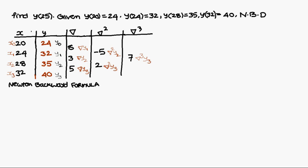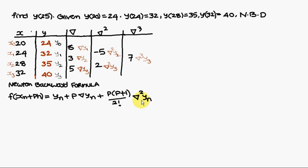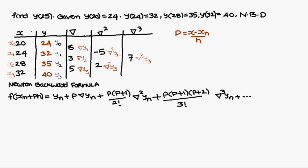Now the Newton backward interpolation formula: f(xn + ph) = yn + p·∇yn + p(p+1)/2! · ∇²yn + p(p+1)(p+2)/3! · ∇³yn + ... For backward interpolation, the p notation uses addition: starting with p, then p(p+1), then p(p+1)(p+2), and so on.